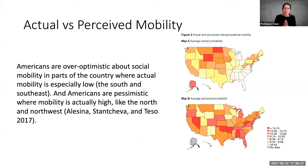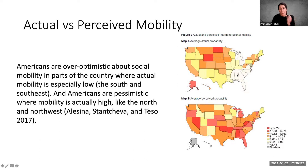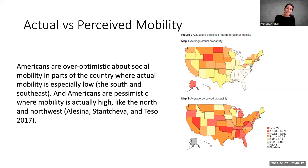There are also important geographical differences in actual versus perceived mobility. Areas in white on the map have less actual mobility — the Appalachian region and the southern United States in general have very little mobility. But they perceive mobility to be very high. Americans are over-optimistic about mobility in general, but particularly over-optimistic in parts of the country where actual mobility is especially low. And Americans are pessimistic about mobility where mobility is actually high, like the north and northwest.